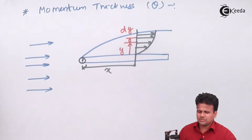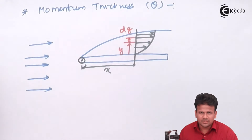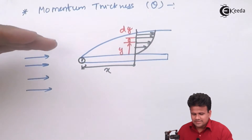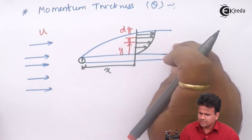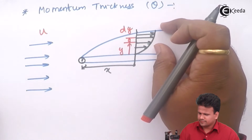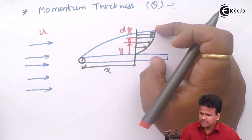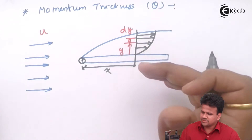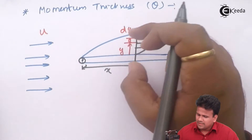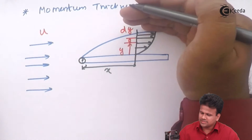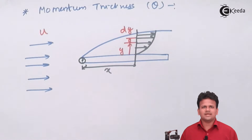What is actually momentum thickness? When there is introduction of this solid surface, there will be a formation of a boundary layer. Due to this, there is reduction in the momentum, because initially the fluid was flowing with a velocity U. Due to the introduction of the plate, there will be some reduction in the mass flow rate. That reduction in mass flow rate, pushed by a distance delta, is called displacement thickness. Whereas here, there is some loss in momentum, and this entire layer is pushed by a distance theta — that is called as momentum thickness.